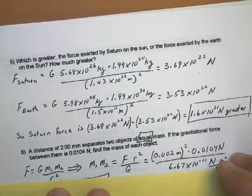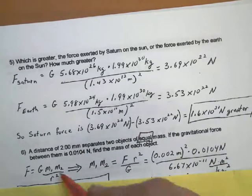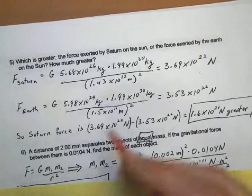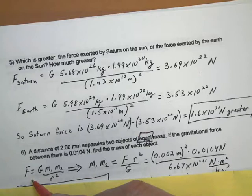Always start with the basic equation: force of gravitational attraction is equal to G times the first mass times the second mass divided by the square of the distance between their centers.